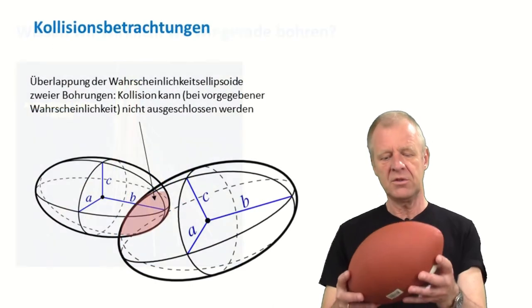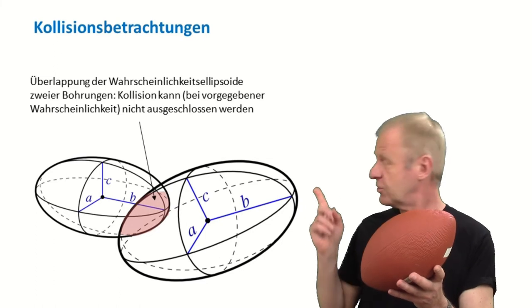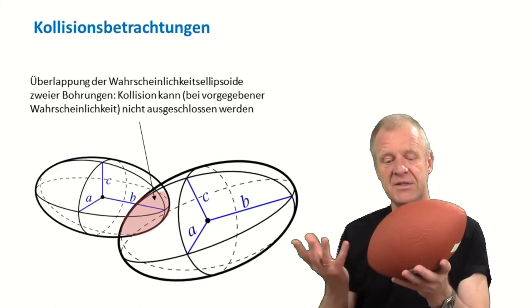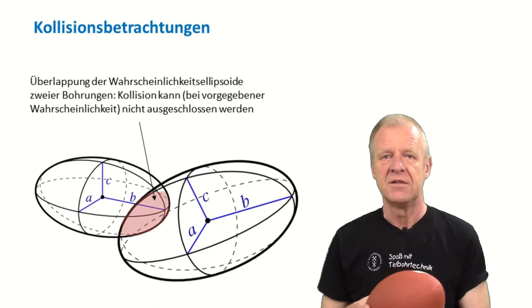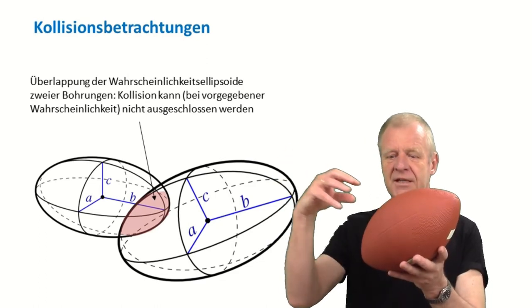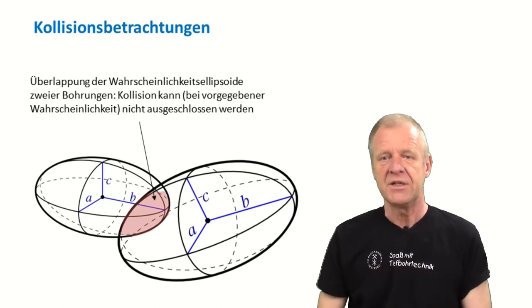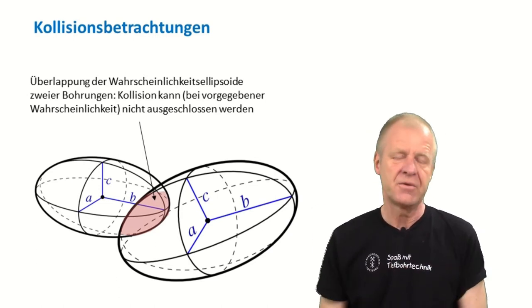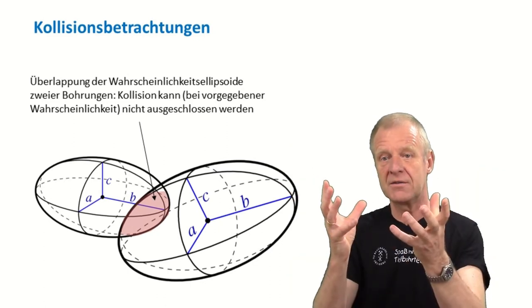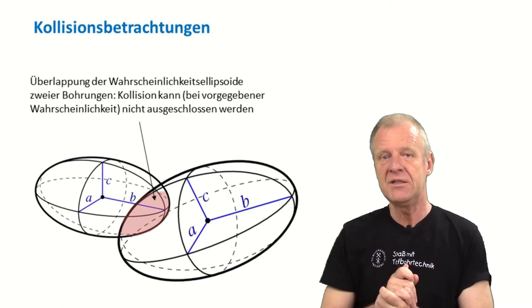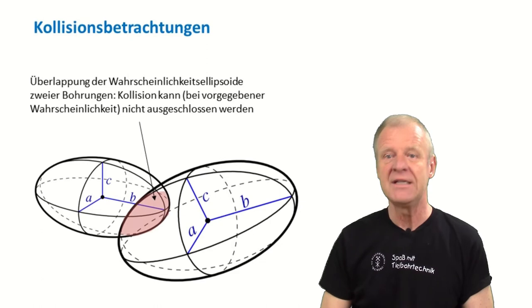We know already that the position of the well we are currently drilling is subject to a certain degree of uncertainty. But the positions of other wells also suffer a certain degree of uncertainty. And that means we have to take a lot of care as we drill by an existing well, so that they do not collide. To decide whether there is a risk of collision or not, we have to consider both ellipsoids of uncertainty. If they intersect or overlap, then we can't fully rule out the possibility of a collision.